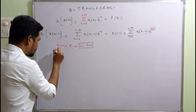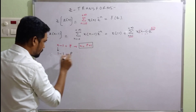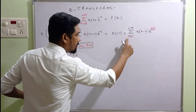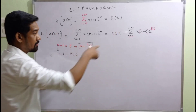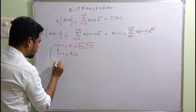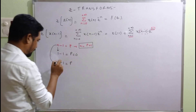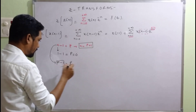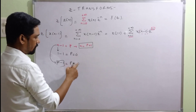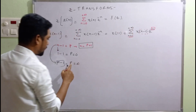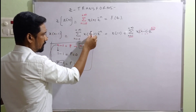When n starts from 1: 1 minus 1 equals 0, so p starts from 0. When n is infinite, p is also infinite (nothing can stand beside infinity). So the new limits for p are 0 to positive infinity.